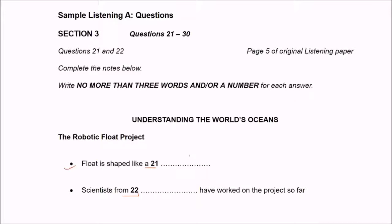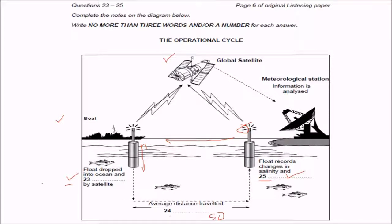Float is shaped like a cigar. So he said cigar. Then scientists from 13 have worked on the project so far. 13 different countries. So Indonesia will come, that will make it 14. And the 23rd one will be float dropped into ocean and activated by a satellite.